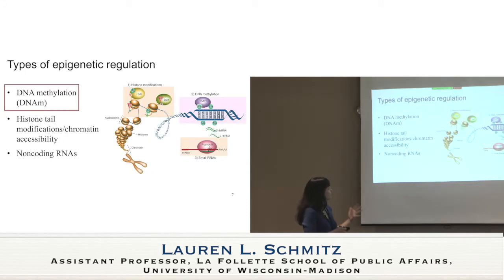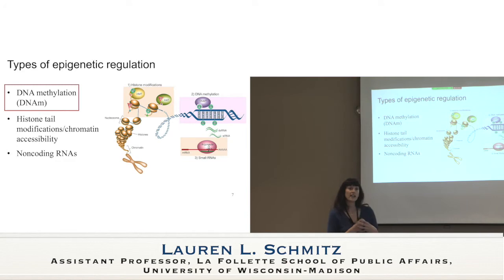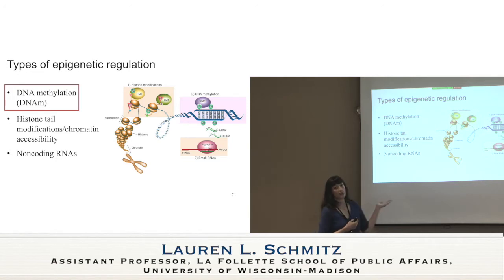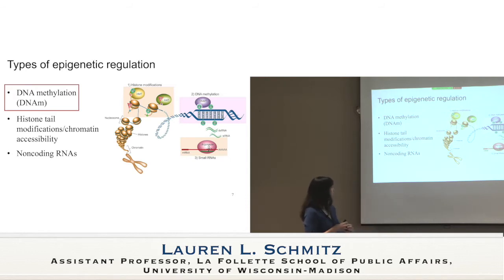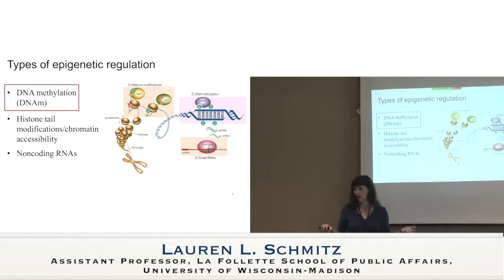There are three major types of epigenetic regulation. The first is DNA methylation, which we're primarily discussing today. The second is histone tail modification, which controls chromatin accessibility. The third is non-coding RNAs — things like small interfering RNAs that wrap themselves around DNA to silence it. Non-coding RNAs play a huge role in X chromosome deactivation together with DNA methylation. We're mostly talking about DNA methylation today because that's what we can measure with microarrays cheaply enough to use in large population studies with the social data you'd like to use.